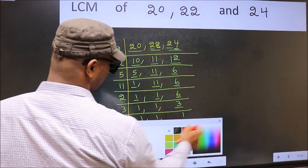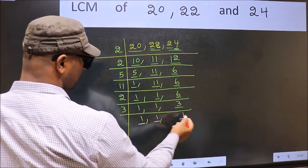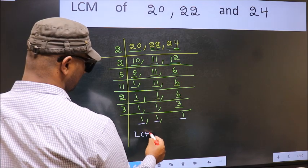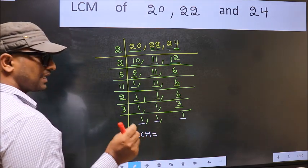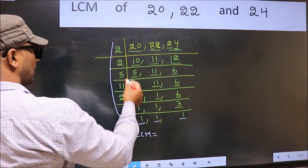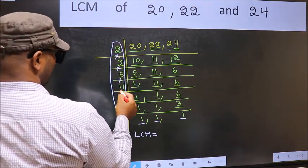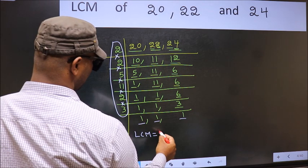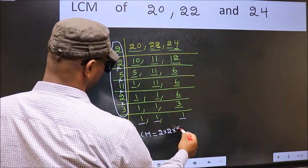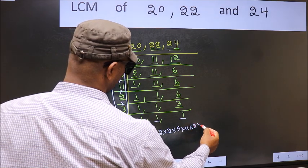So we got 1 in all 3 places. So our LCM is the product of these numbers: 2 × 2 × 2 × 5 × 11 × 2 × 3.